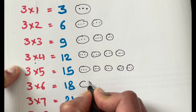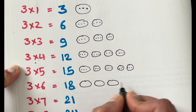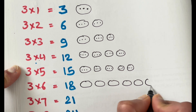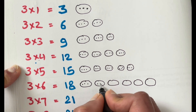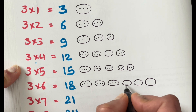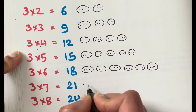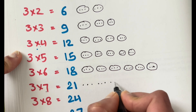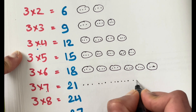Three times six is eighteen, that means there are six groups of three. You can make a line, you can make anything — I prefer to make dots. Three times seven is twenty-one.